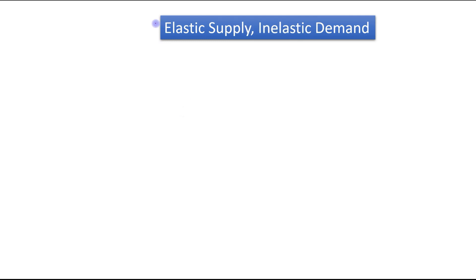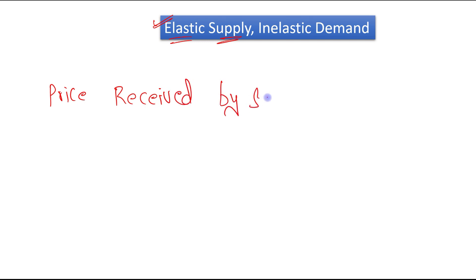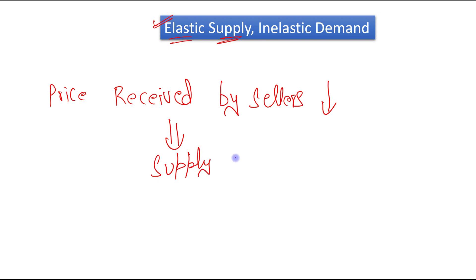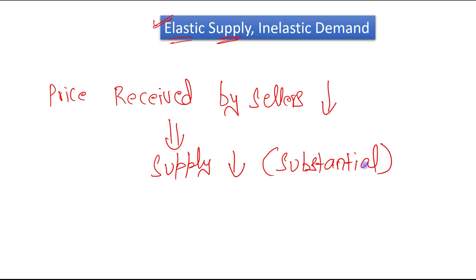Let's see our first case: elastic supply and inelastic demand. Elastic supply means that the quantity supplied will respond substantially to a change in price. When a good is taxed, price received by the sellers will decrease. Supply will decrease, but because there is elastic supply, it will decrease by a substantial amount — because sellers are having good alternatives to produce that particular good. They will be more willing to leave the market when a good is taxed, and when they are leaving the market, they will bear less of the burden of the tax. So in this case, sellers will bear less burden of the tax.